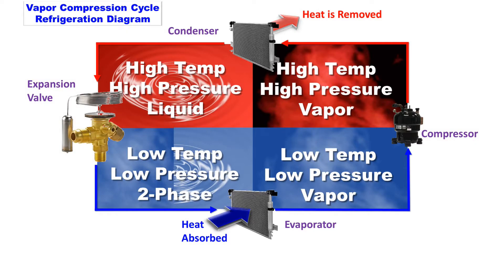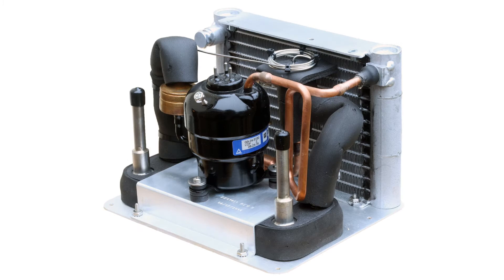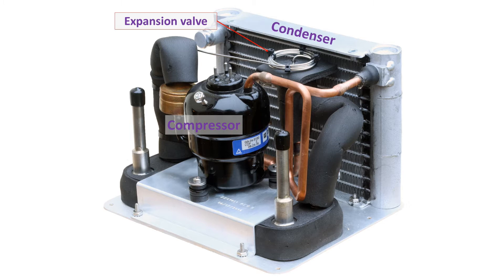Vapor compression cycle refrigeration is a process which uses the physics of phase change heat transfer. The components of the base refrigeration system are the compressor, condenser, expansion valve, and evaporator.